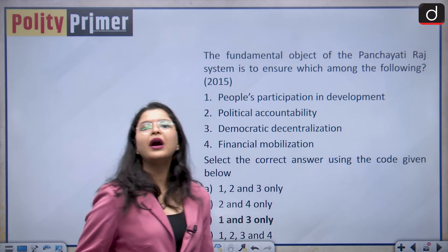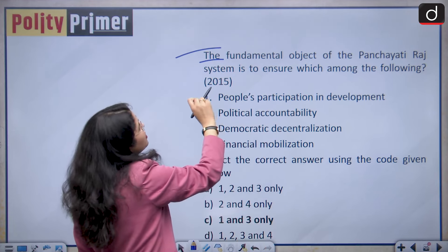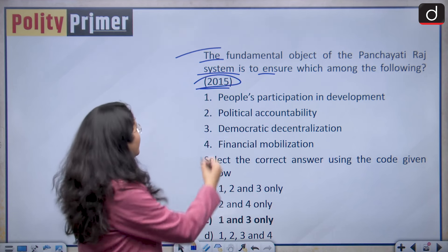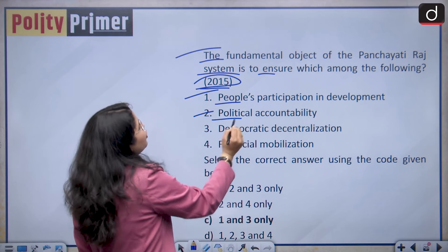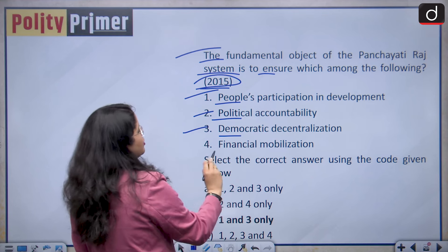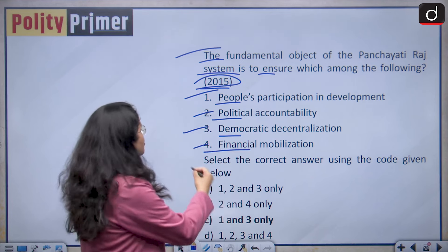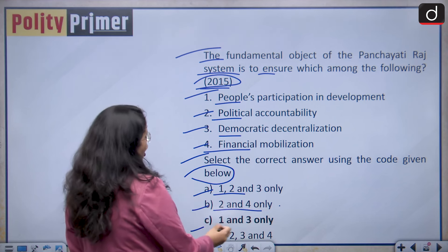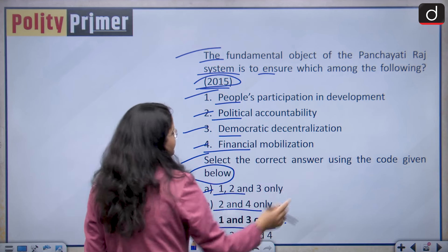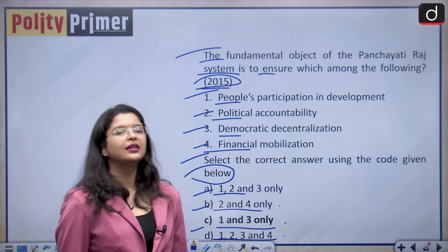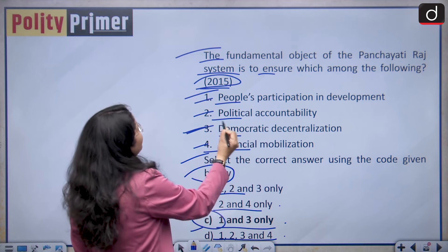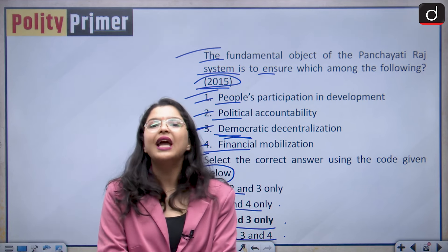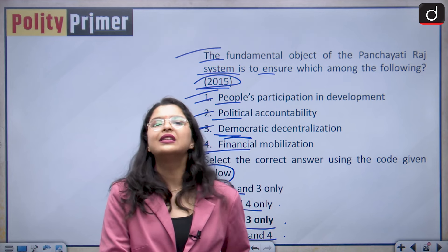Moving forward to the practice question from today's session. The question is: the fundamental object of the Panchayati Raj system is to ensure which of the following? This is a PYQ asked in the year 2015. Statement 1: people's participation in development. Statement 2: political accountability. Statement 3: democratic decentralization. Statement 4: financial mobilization. Options: A is 1, 2 and 3 only; B is 2 and 4 only; C is 1 and 3 only; D is 1, 2, 3 and 4. The correct answer is option C — only statements 1 and 3 are correct, because the system aimed to enhance people's participation in democracy at the grassroots levels and to promote decentralization.